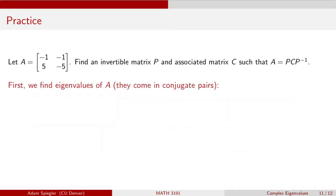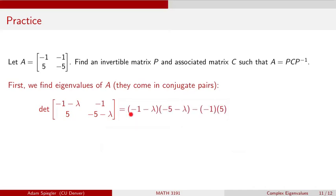If they're complex, then we should see that they're going to come in conjugate pairs. We want to find the characteristic polynomial by taking the determinant of A minus lambda I. That means we're going to subtract lambda from the diagonal entries of A, getting minus 1 minus lambda and minus 5 minus lambda along the diagonal, while the off-diagonal entries don't change. Computing the determinant, we get the quantity minus 1 minus lambda times the quantity minus 5 minus lambda, minus minus 1 times 5. We can group terms and simplify to the characteristic equation lambda squared plus 6 lambda plus 10 equals 0.